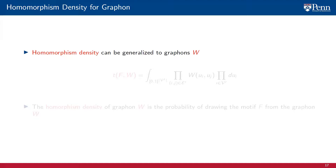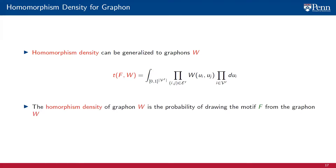We still have a third definition of homomorphism density to introduce: the homomorphism density of a graphon. This is akin to the definition for weighted graphs, except the sum is replaced by an integral. The products are over the edges and vertices that define the motif. This integral has a very simple interpretation: it is the probability of drawing the motif F from the graphon W when we sample n' nodes from the graphon.